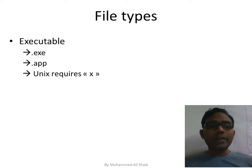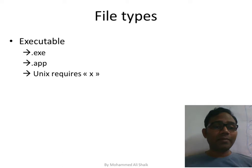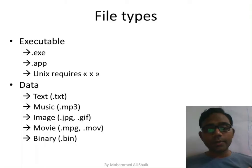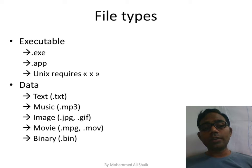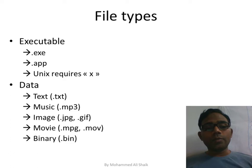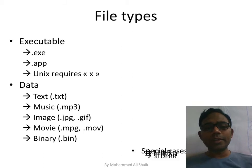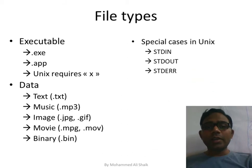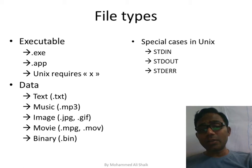File types include: executable files (.exe for Windows, .app for Unix); data files (.txt); music files (.mp3); image files (.jpg, .gif); movie files (.mpeg, .avi); binary files (.bin). In Unix, special cases include standard input (stdin), standard output (stdout), and standard error (stderr).